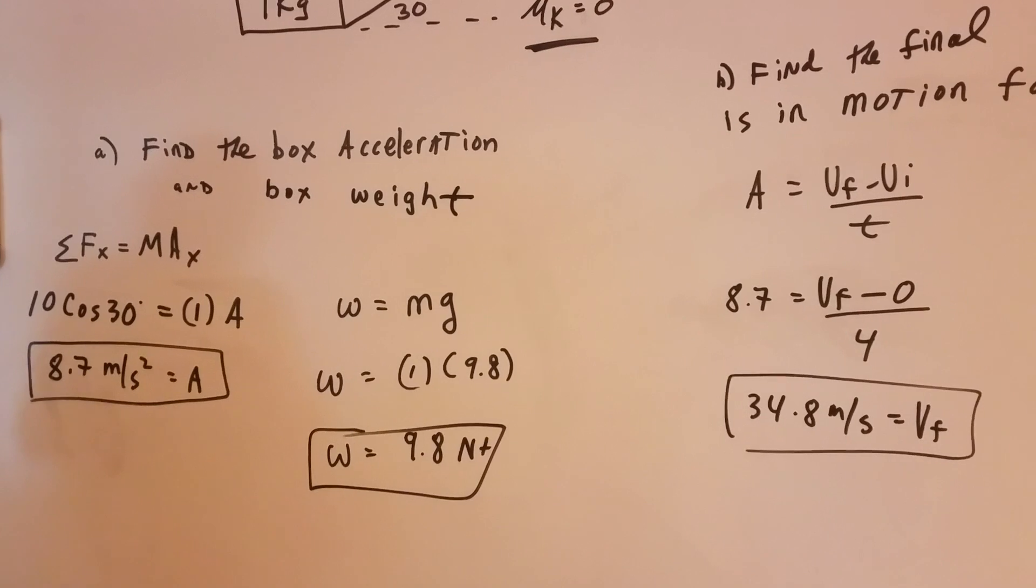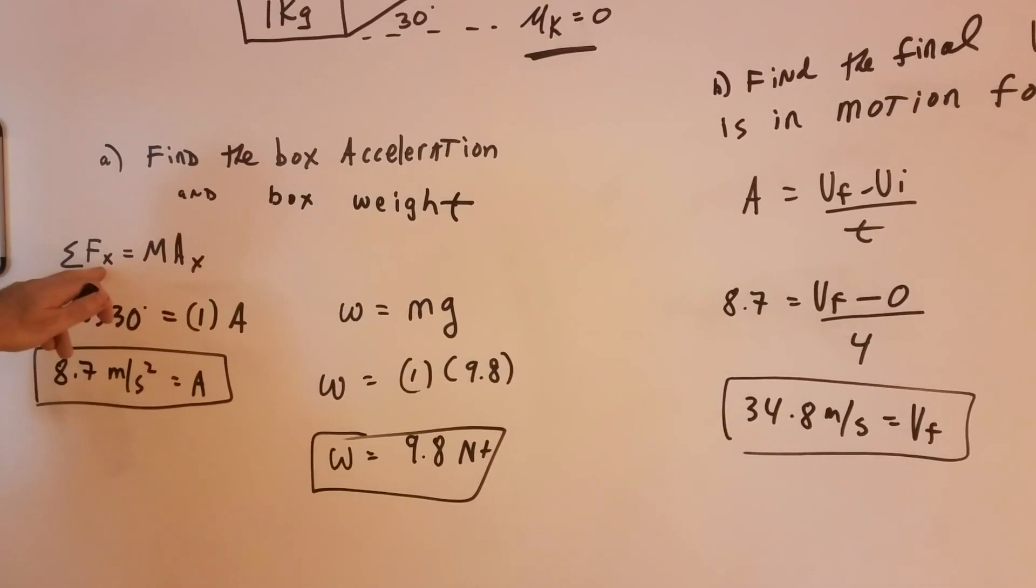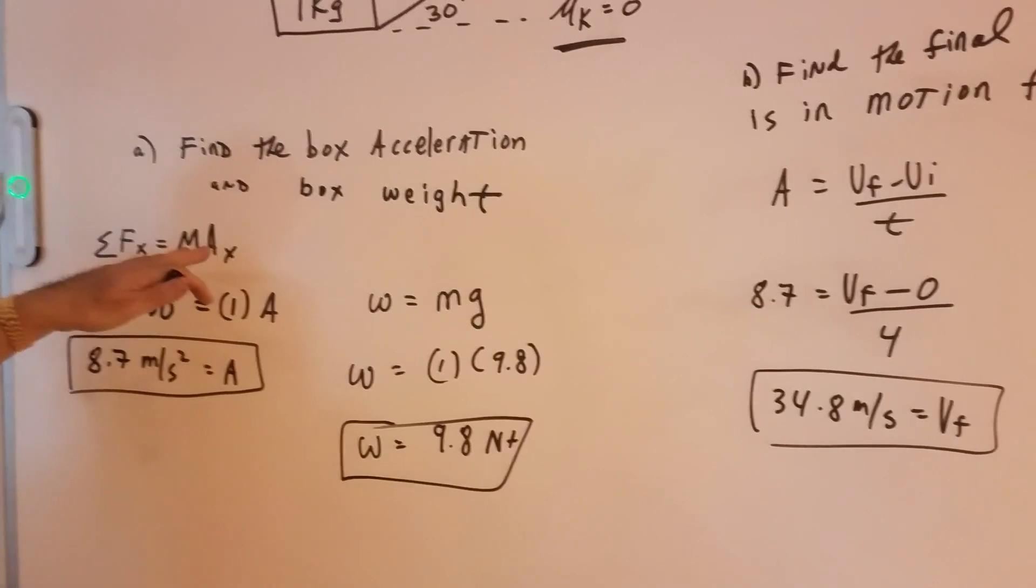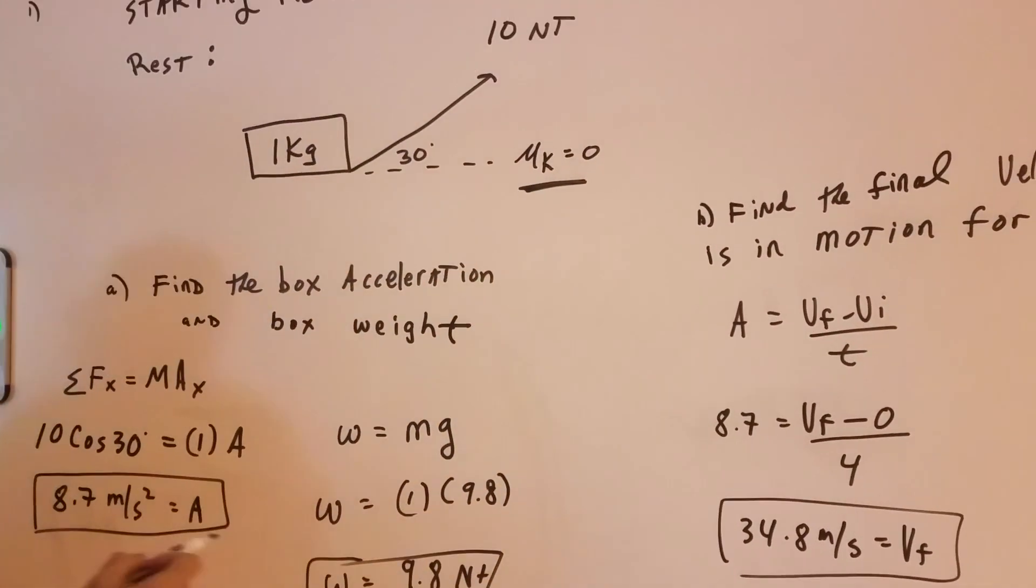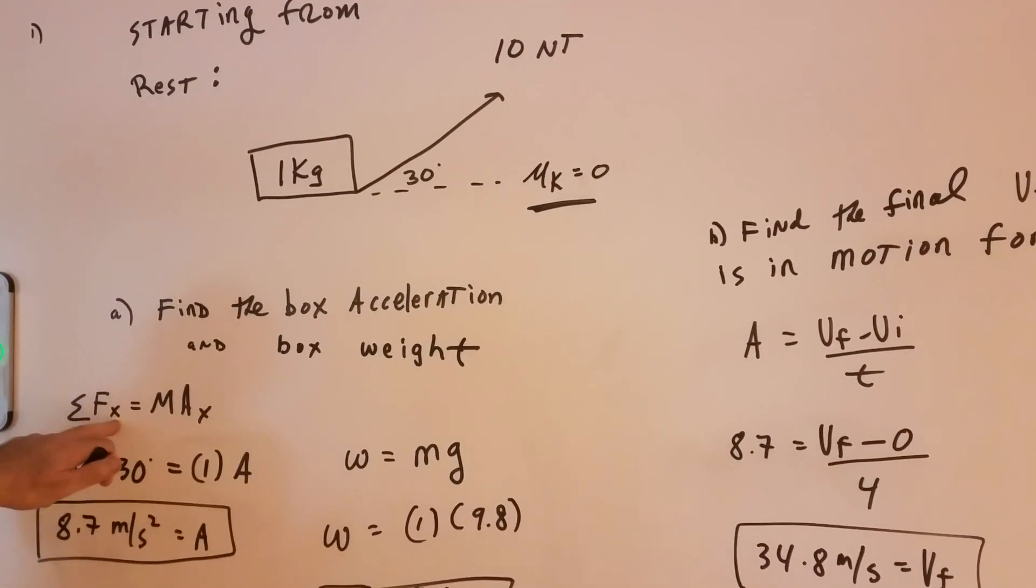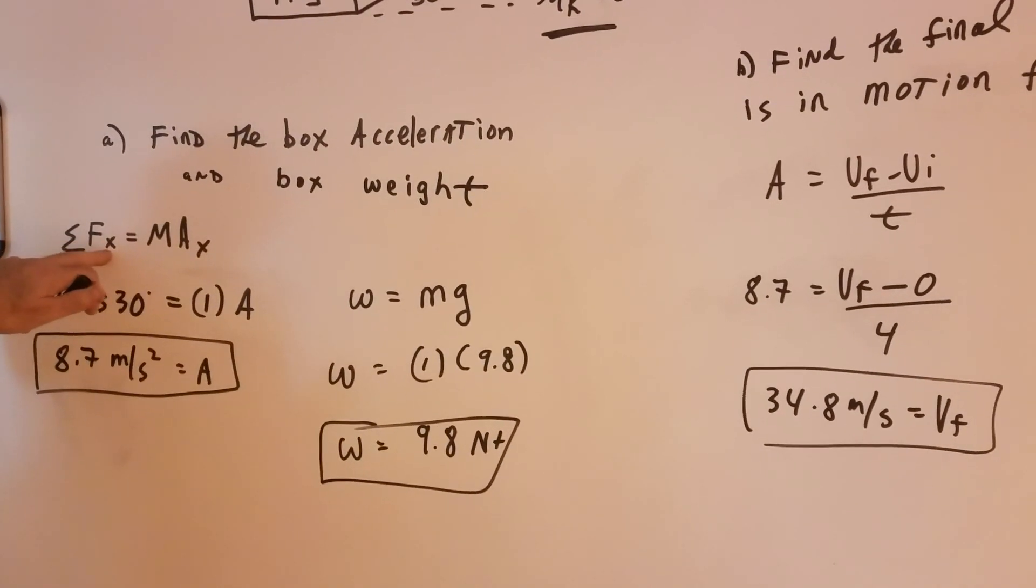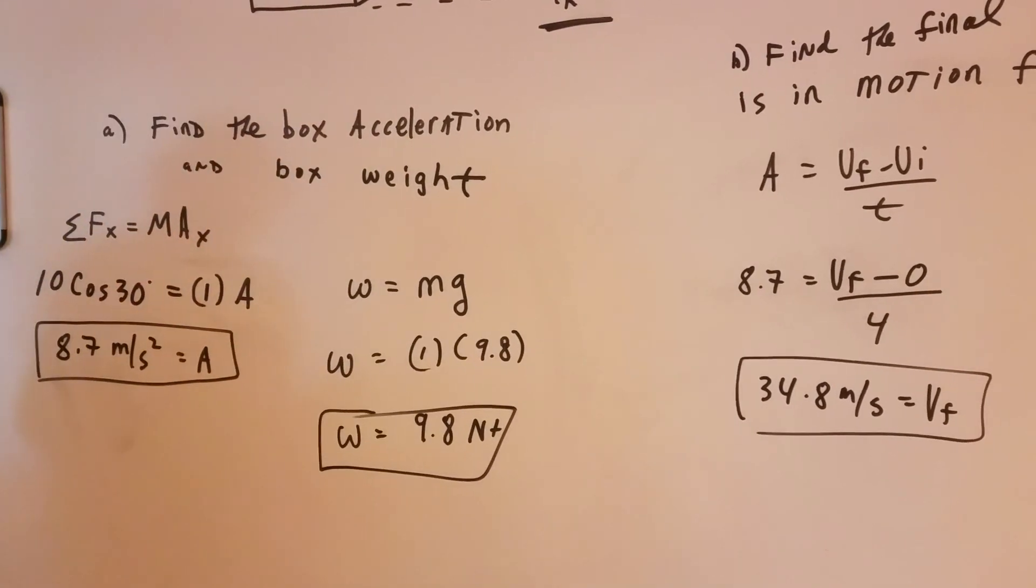Now the first thing what we're going to do in these problems, instead of writing it as F equals ma, I'm going to write it as the sum of all the forces equals ma. But since the box is accelerating horizontally, we're in the x direction. So notice I broke it up into what we call a component. So we have the force in the x direction, and obviously the acceleration is going to be in the x direction.